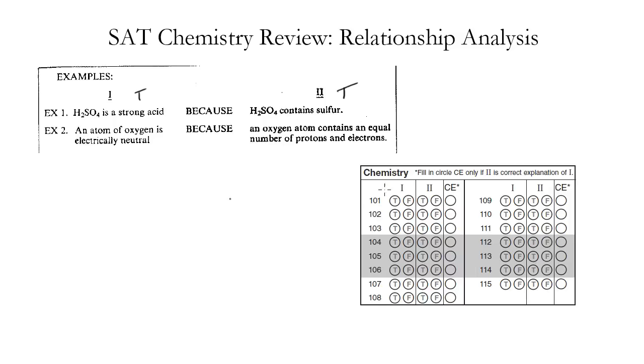So here, if this were number 101, we would bubble in true, and we'd bubble in true. But then we have to determine, since they're both true, is it a correct explanation? Does this statement explain why that statement is true? And in this case, no. H2SO4 is a strong acid for reasons other than the fact that it contains sulfur. So we don't mark the CE bubble.